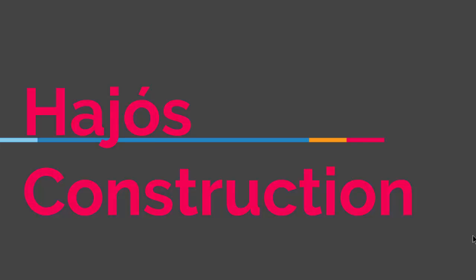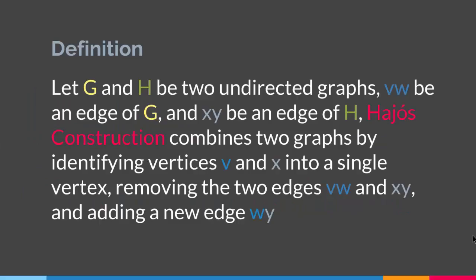Hello everyone! In this lecture we'll talk about Hajos Construction. So what is Hajos Construction? Well, basically it is a binary operation that involves two graphs in order to create a new graph.